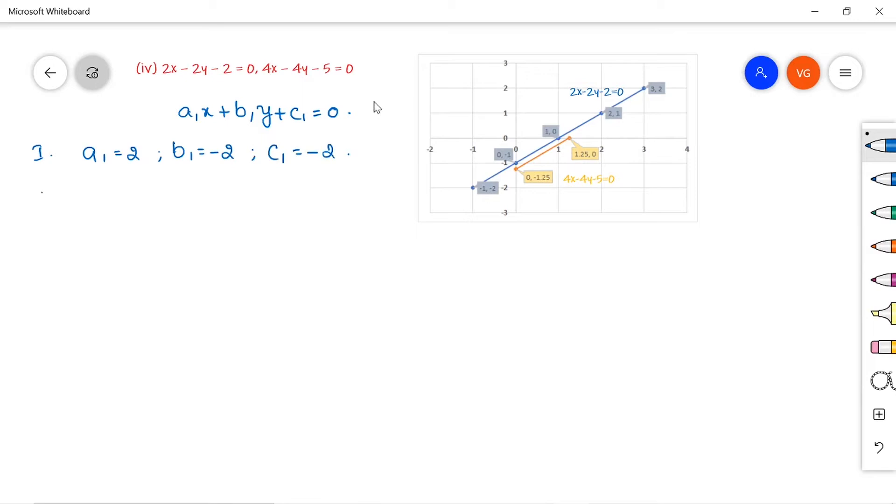From the second equation, a2 equals 4, b2 equals minus 4, and c2 equals minus 5.